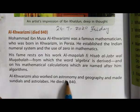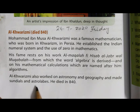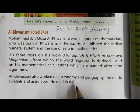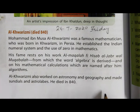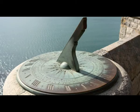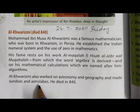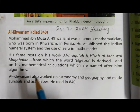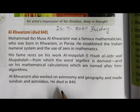Al-Khwarizmi also worked on astronomy and geography, and made sundials and astrolabes. Astronomy is the study of heavenly bodies and stars with the help of scientific instruments. Geography is the study of the earth. Sundials are used as time clocks, and astrolabes were used as a system of navigation. He died in 840.